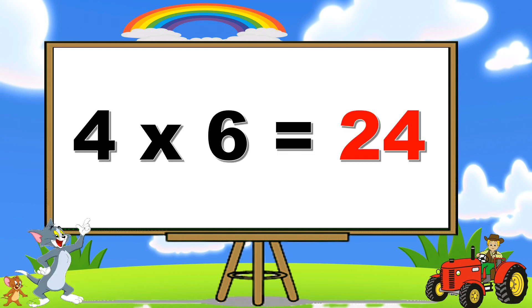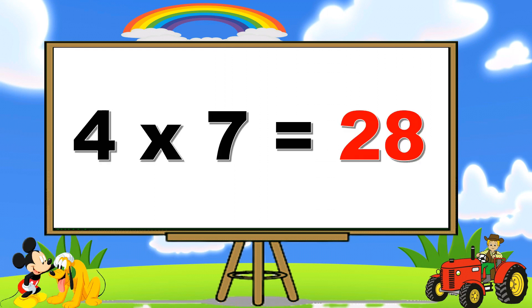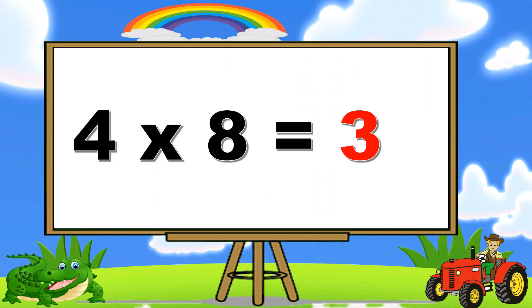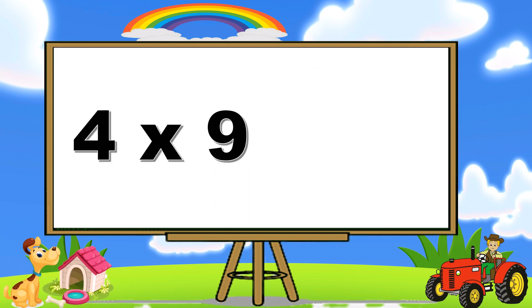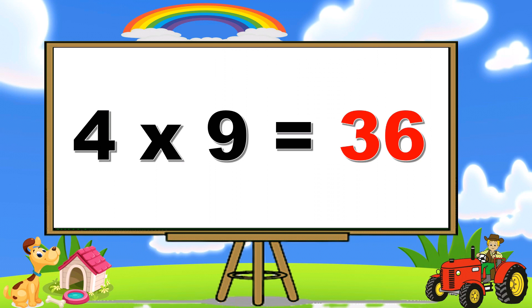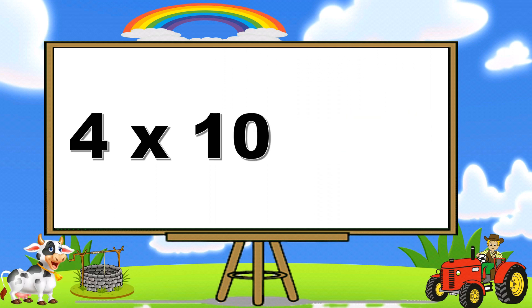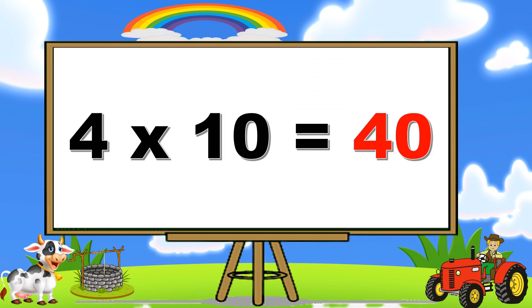Four sixes are twenty-four. Four sevens are twenty-eight. Four eights are thirty-two. Four nines are thirty-six. Four tens are forty.